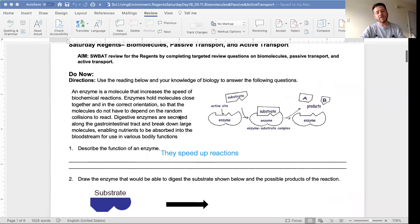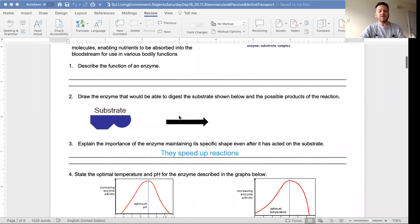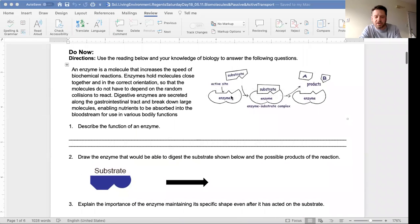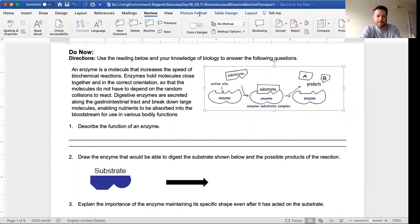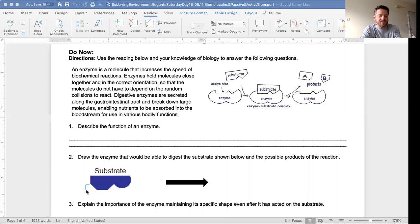Now I'm gonna move this up. Draw the enzyme that is able to digest the substrate shown below and the possible products of the reaction. Let's look at the picture up here. Look at the enzyme and this is the substrate. So the enzyme looks like this. Let's draw an enzyme that will match this site. That doesn't have to be perfect, I just want you to get the idea of how it would fit.